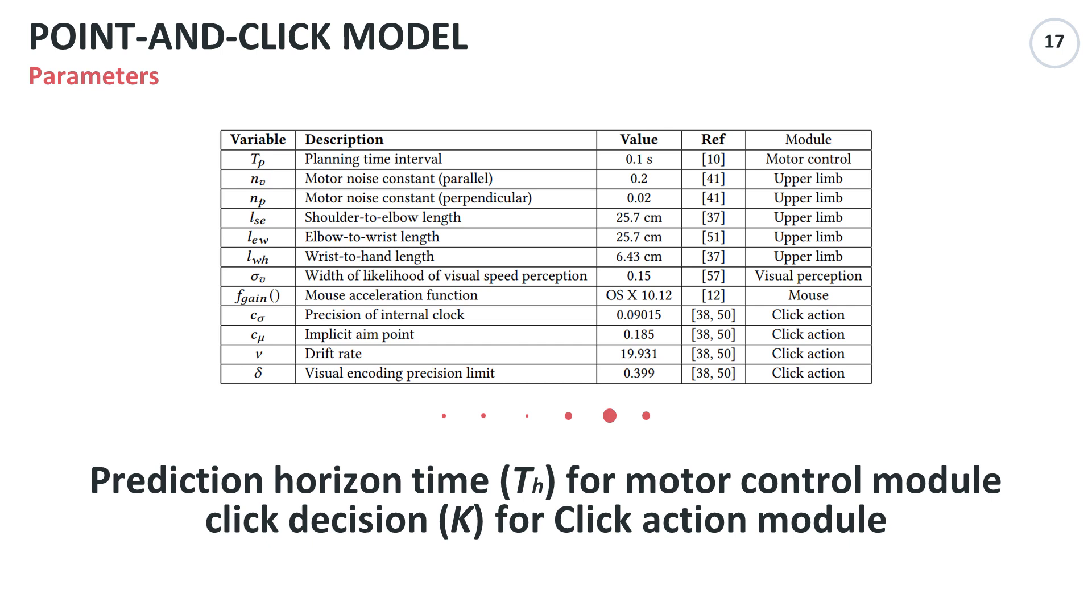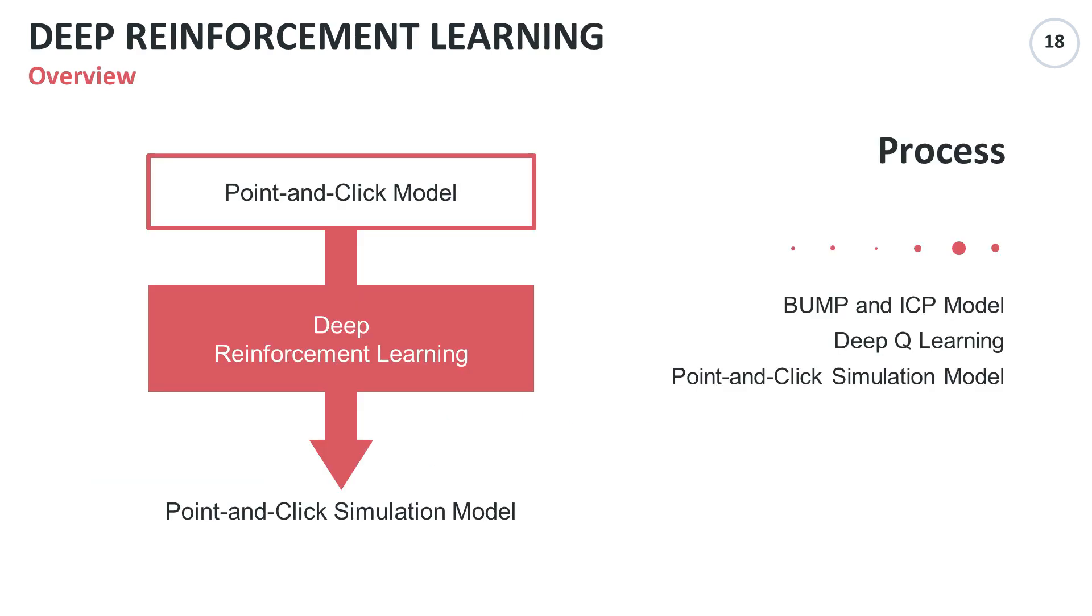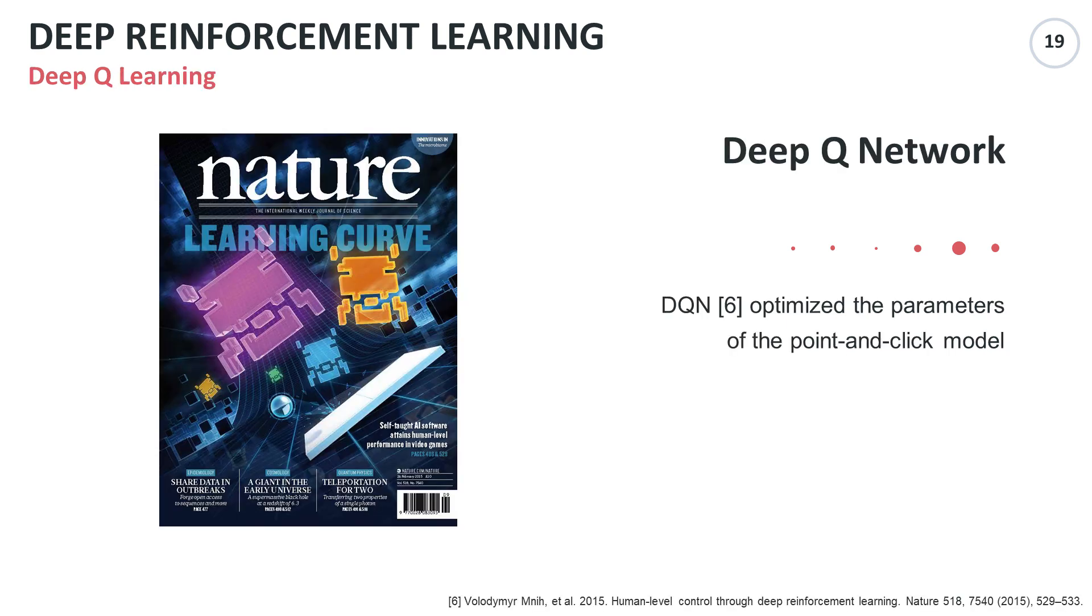The modules require parameters, but the predictive horizon time and click decision change as the simulation processes. So optimization for these two values is necessary. For optimization, we conducted simulation-based learning with deep reinforcement learning. Among various deep reinforcement learning algorithms, we used Deep Q network.